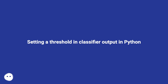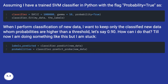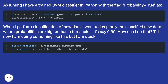Setting a threshold in classifier output in Python. Assuming I have a trained SVM classifier in Python with the flag probability equals true. When I perform classification of new data, I want to keep only the classified new data whose probabilities are higher than a threshold, let's say 0.90. How can I do that? I am doing something like this but I am stuck.